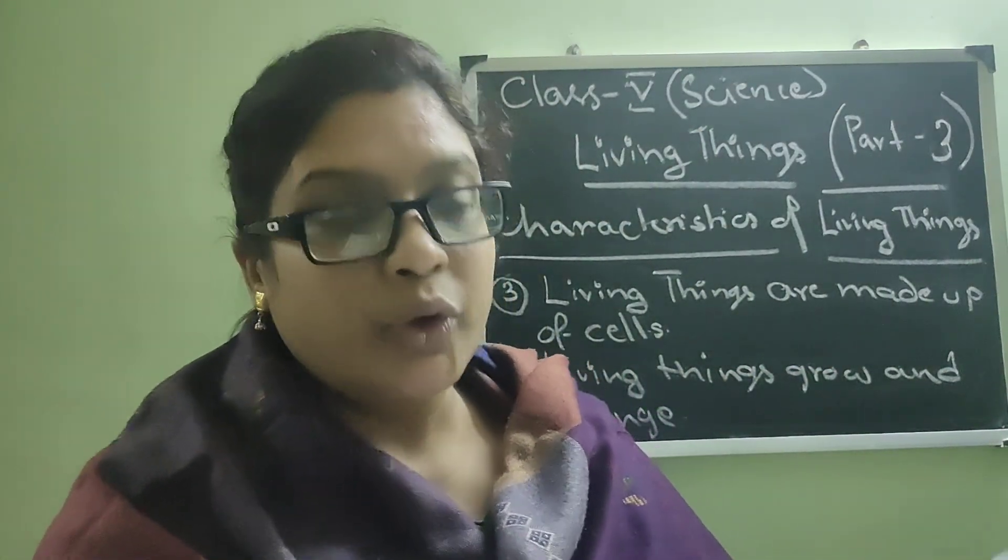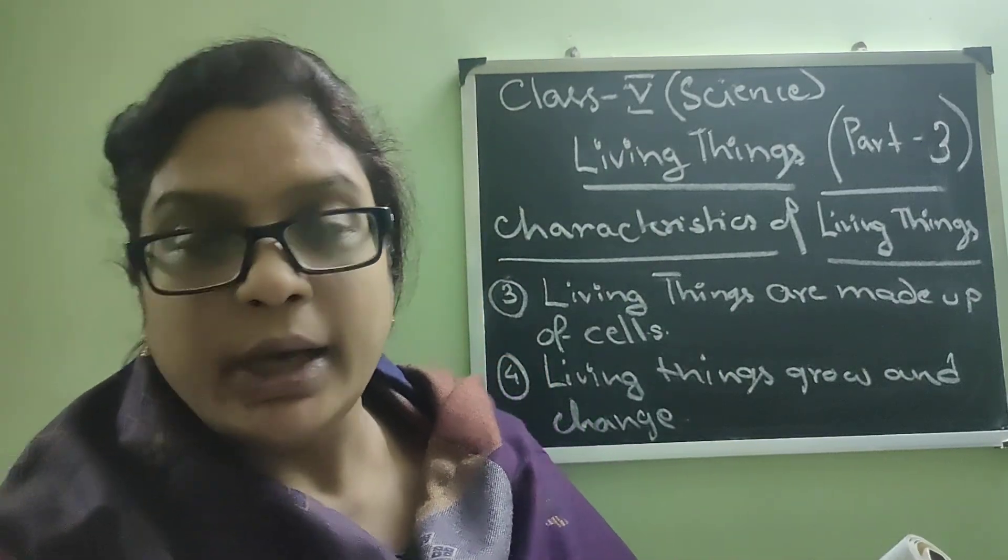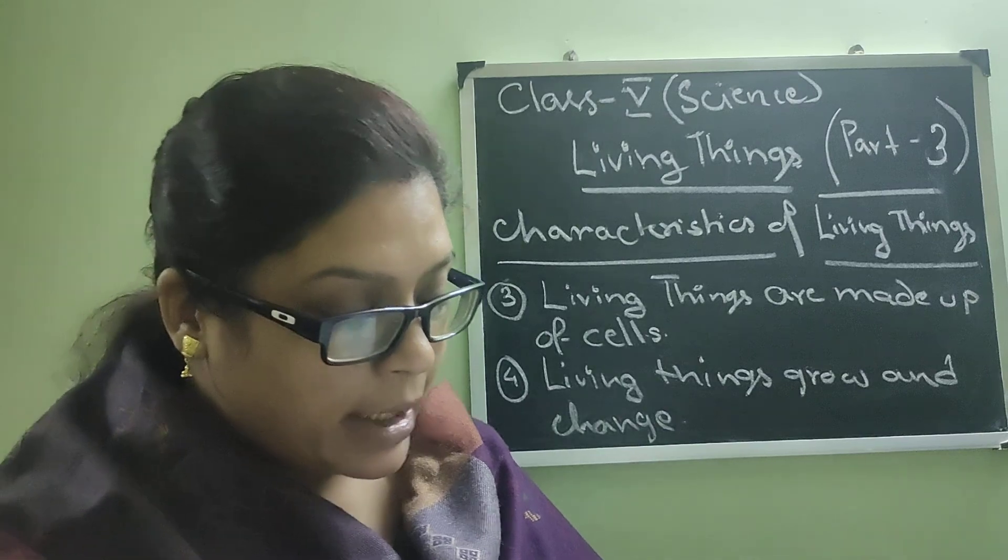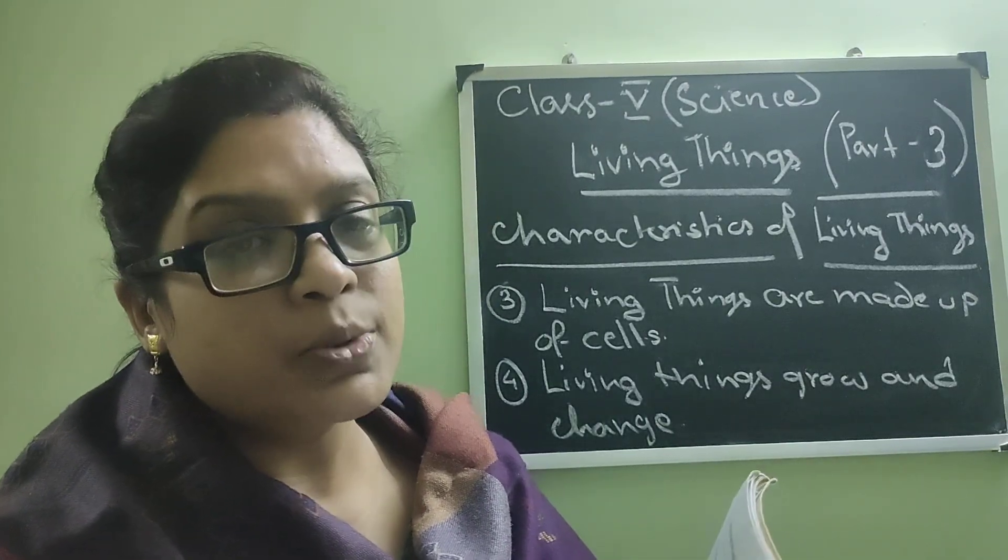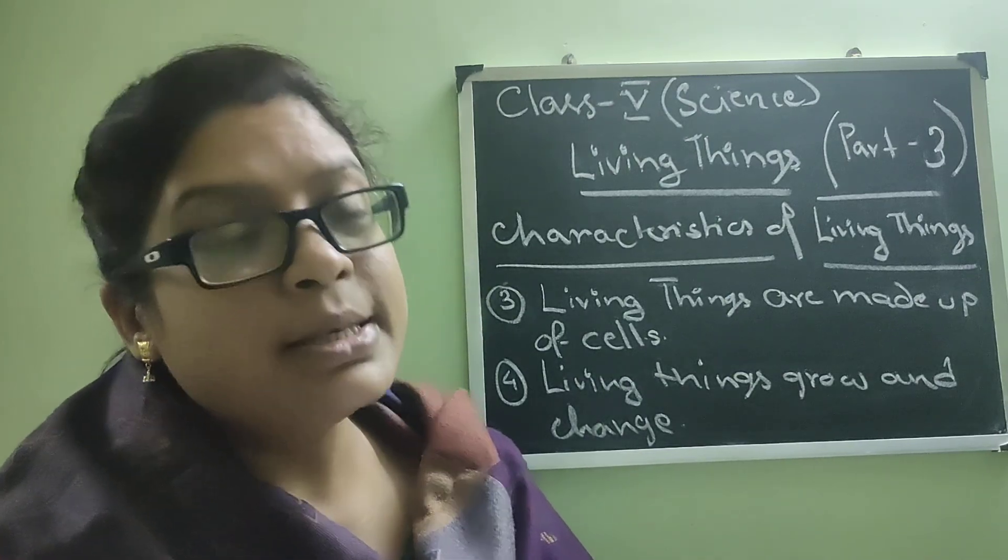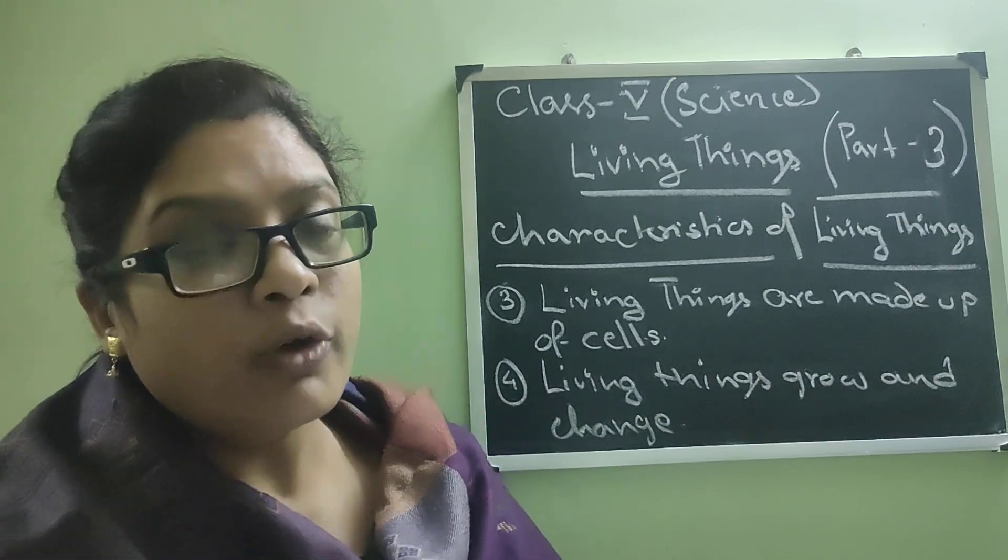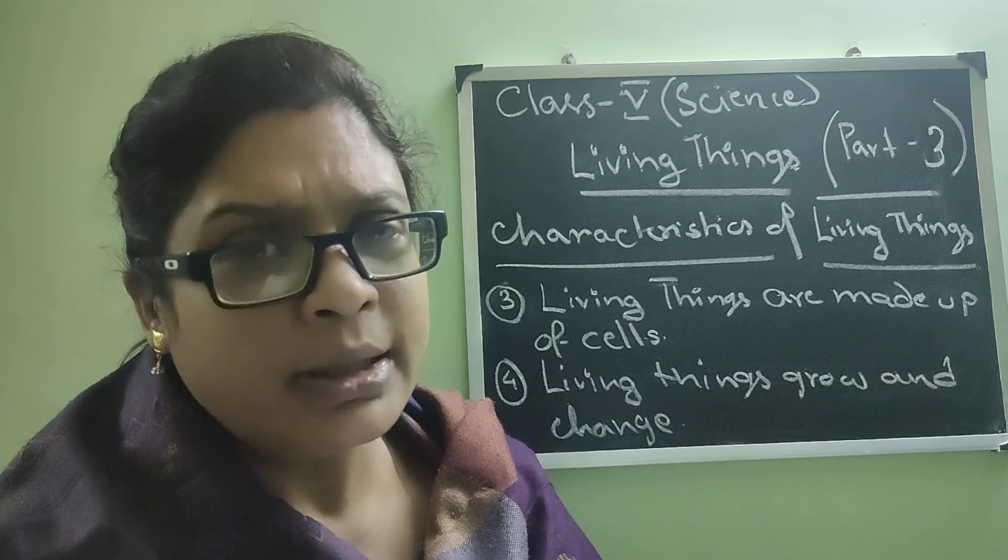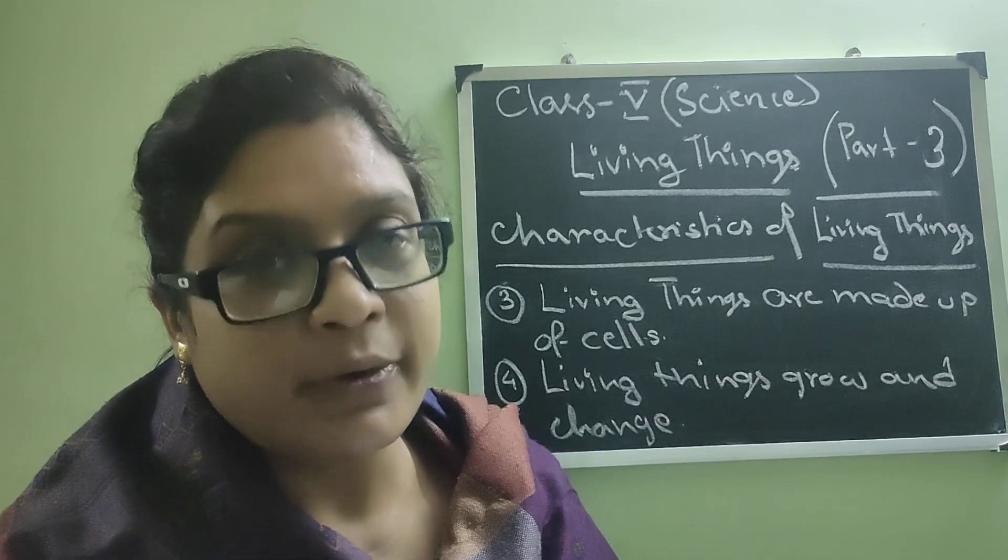Hello Class 5, welcome to your science online class. We were doing the chapter living and non-living things and we have already started with the characteristics of living things. The first two characteristics we learned: living things move on their own in search of food, water, and shelter, and living things need air, water, and food because without that it is impossible for life to survive.